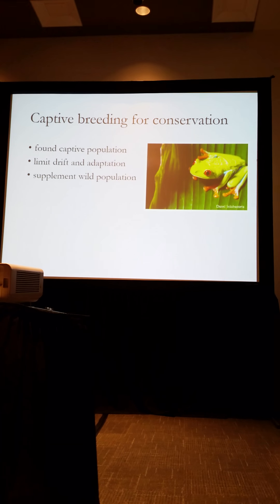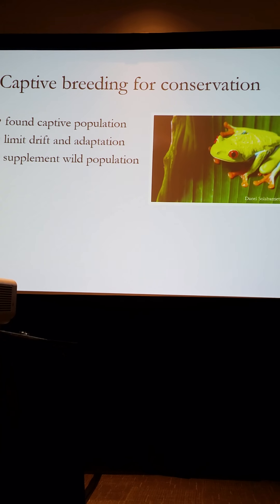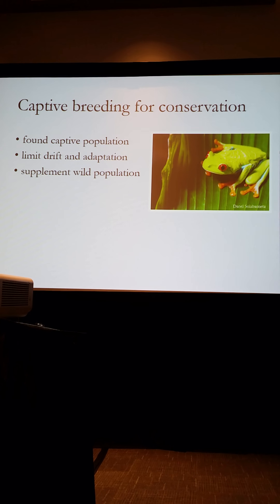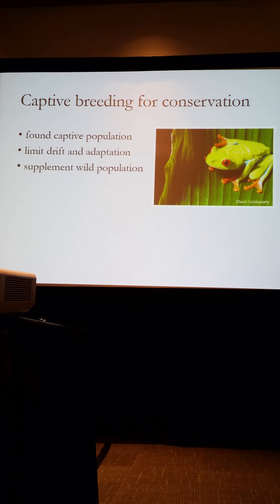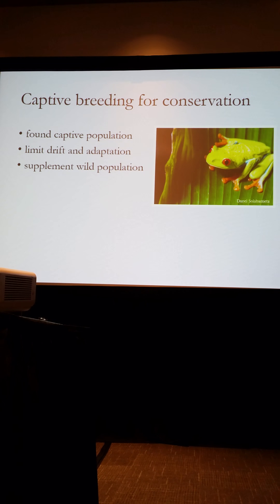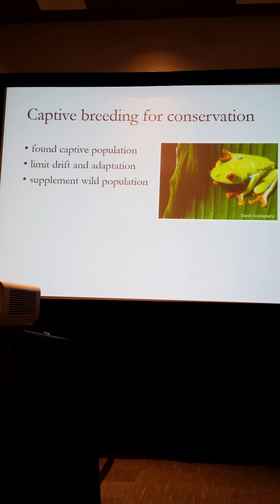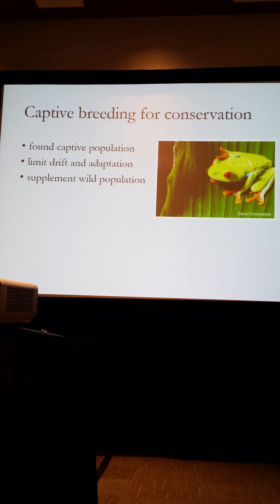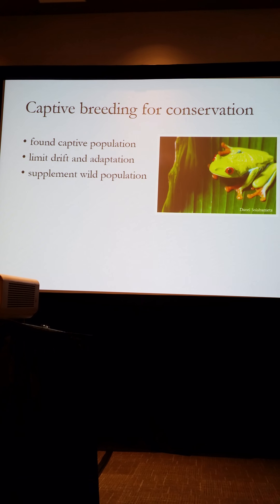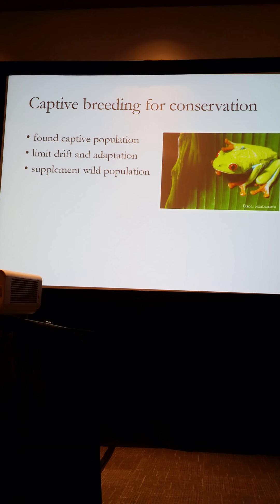In these kinds of situations, what usually happens is individuals are collected from the wild, brought into captivity, and then are bred for a number of generations in a way that's meant to limit the effects of drift and adaptation to captivity. And then after some period of time, at least some of these individuals can be used to supplement either existing wild populations or as a source for reintroduction of new populations into the wild.